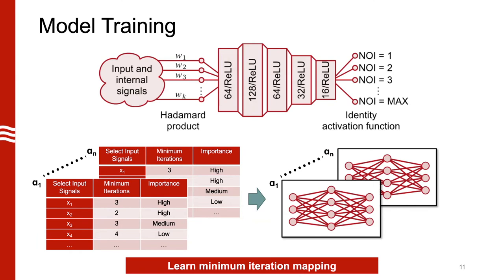Once we have our series of data sets, we train a series of neural networks — one for each data set. The neural network takes the input signals the designer specified, feeds them through a Hadamard product which weights the inputs for pruning, and we use stochastic gradient descent for training. The output is a one-hot encoded iteration count for the iterations needed to run that input to achieve the target quality. The output of this stage is a series of trained neural networks.